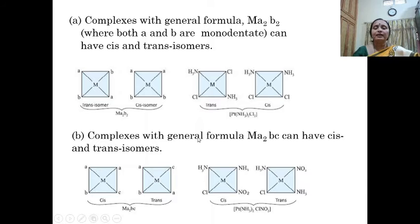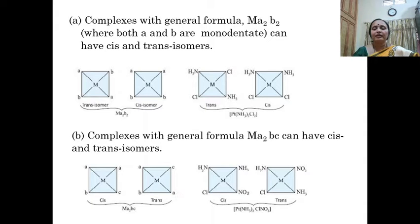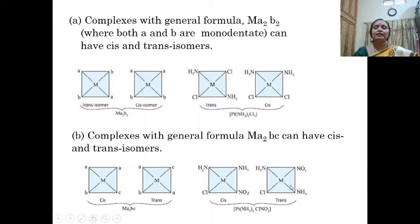Complexes with the general formula MA₂BC also exhibit cis-trans isomerism. When the adjacent groups are present on the same side it is called a cis isomer, and when they are present on the opposite side they are called a trans isomer. For example, when both ammonia molecules are on the same side it is a cis isomer, whereas if they are on the opposite side it is a trans isomer.